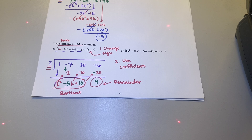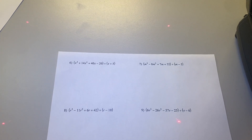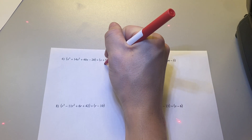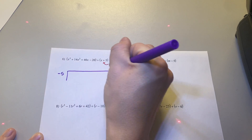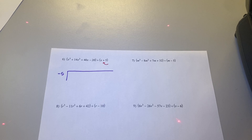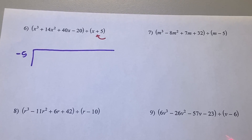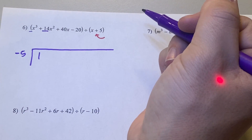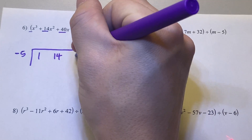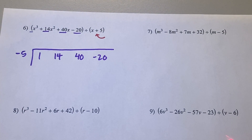So synthetic — you're still doing the same thing, you're dividing these guys. But was that a little bit quicker than long division? Let's try it again — this is brand new, so let's try it a couple more times. Our first step: change this sign. So this positive 5 turns into a negative 5 on the outside. Then what goes on the inside? Just the coefficients. What's the coefficient on x cubed? On x squared? 14. On x? 40. And my last number? Negative 5.